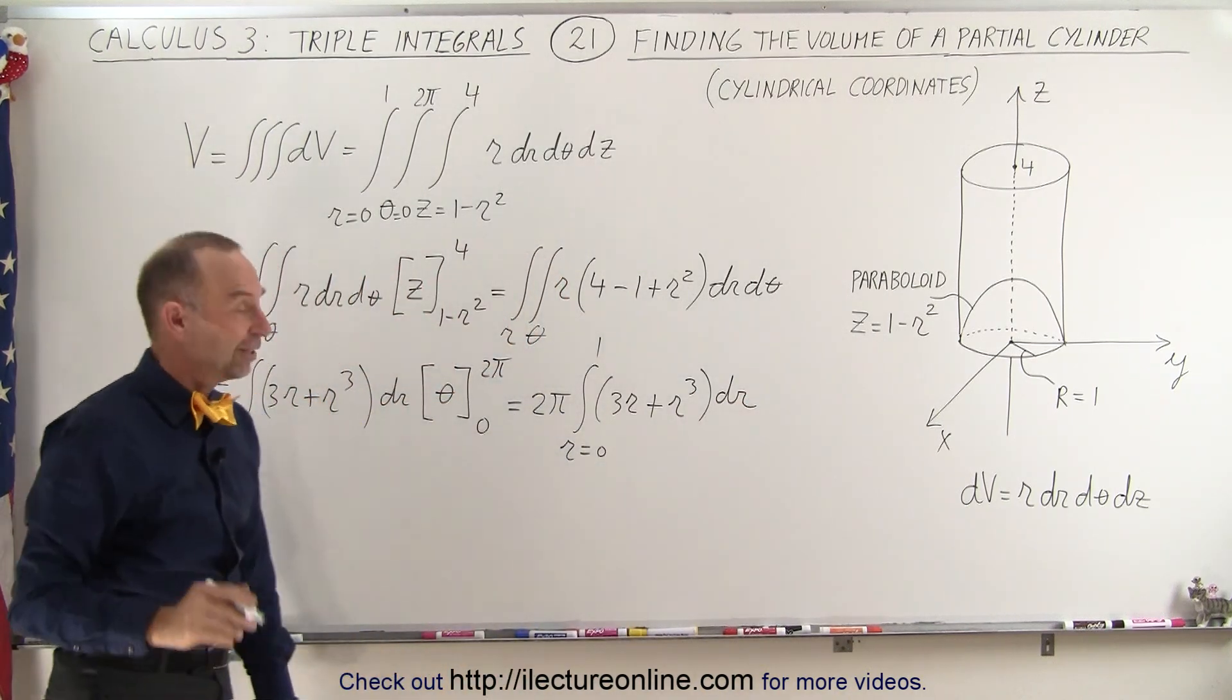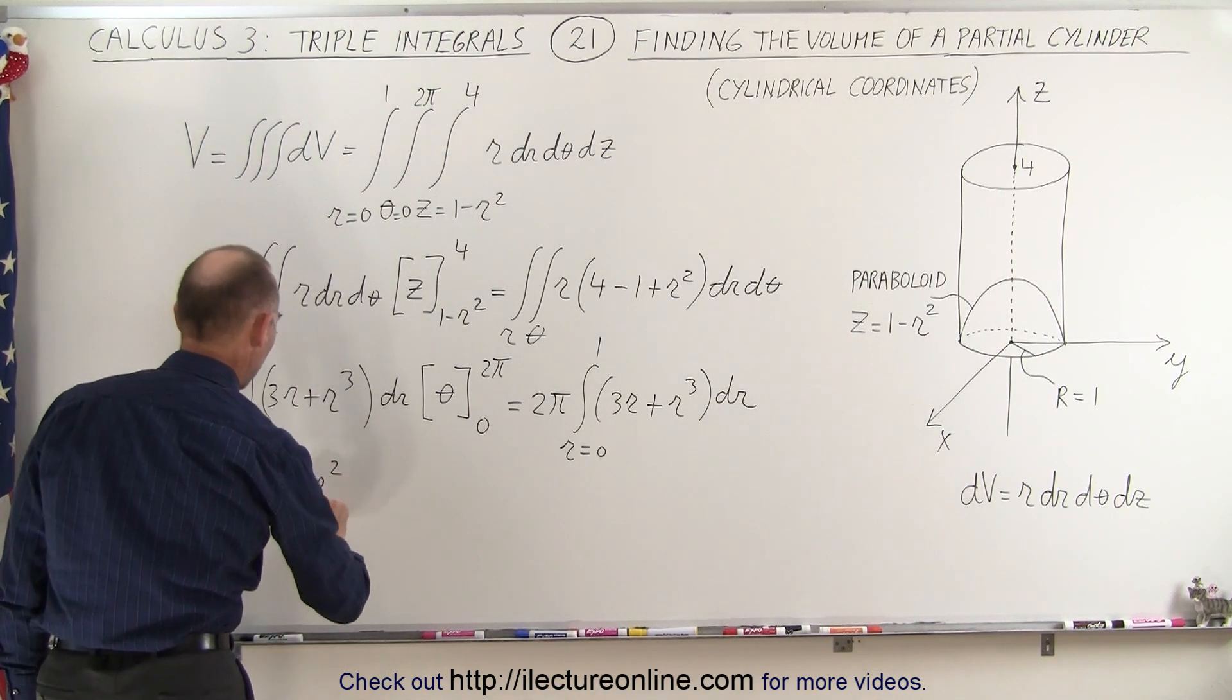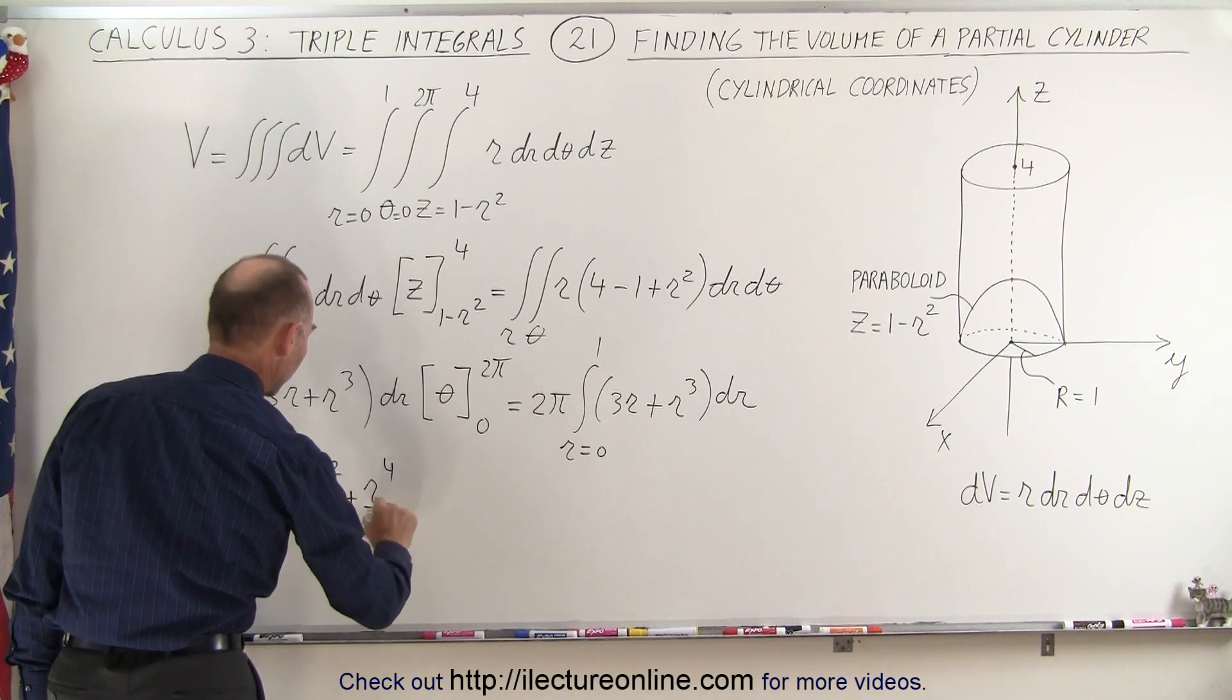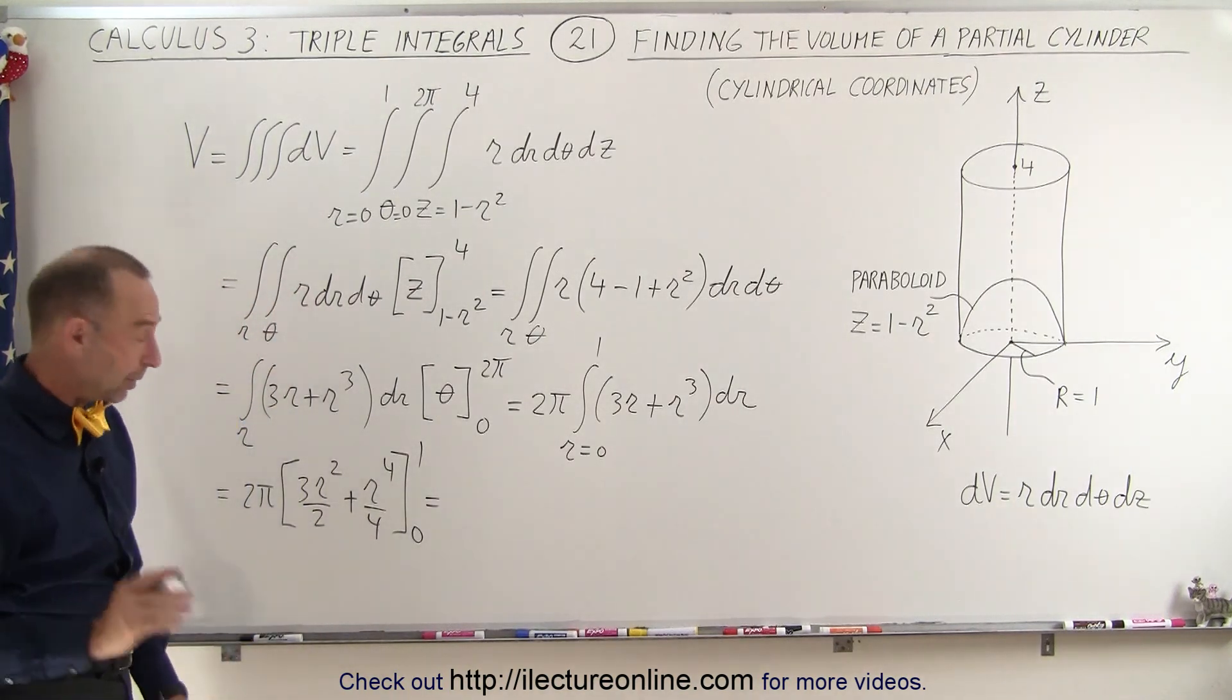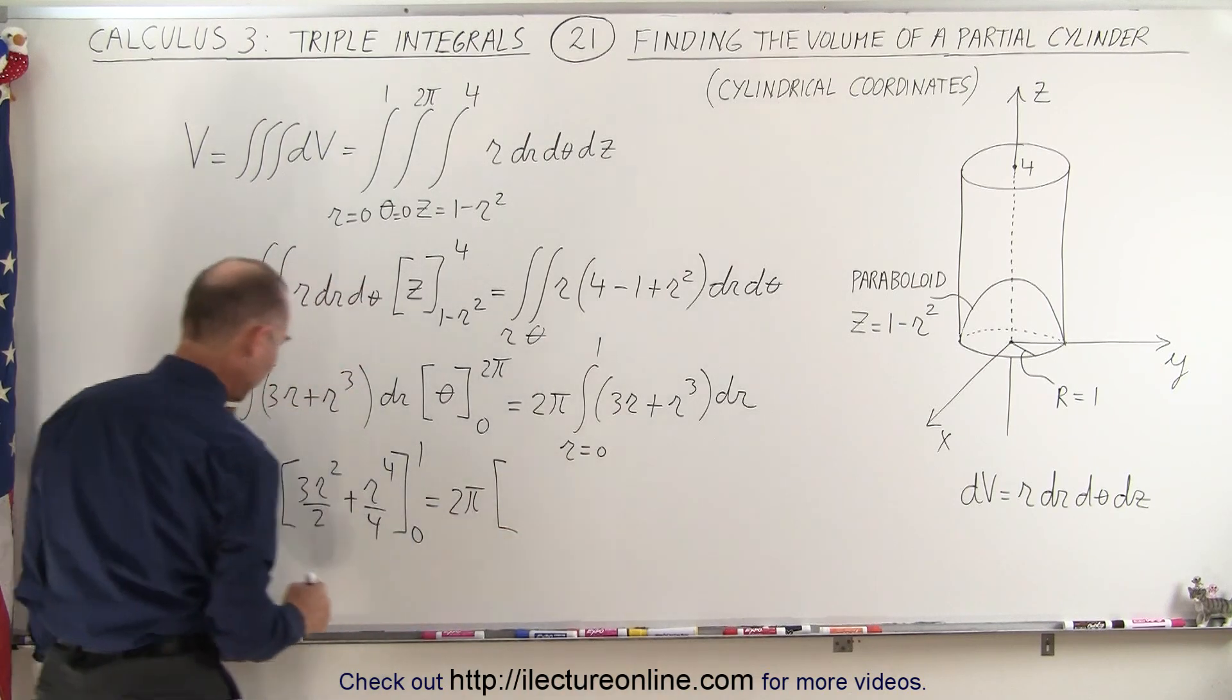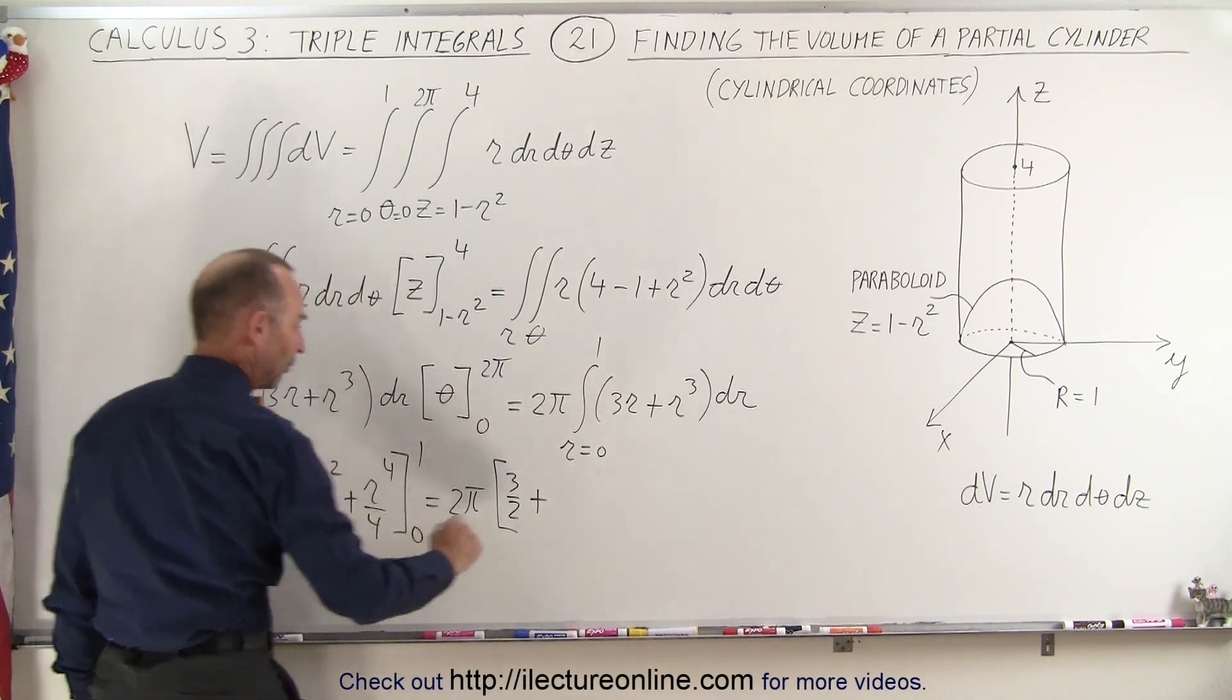And of course, that's an easy integral. This becomes equal to 2π times 3r squared over 2 plus r to the 4th over 4, evaluated from 0 to 1. You plug in the lower limit, you get nothing. Plug in the upper limit, you get the following, 2π times, that would be 3 over 2 plus 1 over 4.